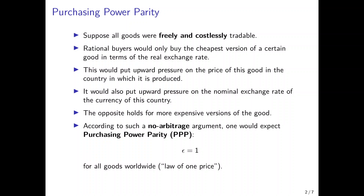As one can easily imagine, according to such a no-arbitrage argument — where buyers are rational and only buy the cheapest good — one would expect in the end that bikes would cost the same in all countries. In this case, the real exchange rate would be equal to one. This is the law of one price.